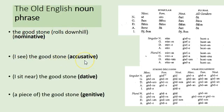Accusative is the direct object case — when the noun is being directly acted on. 'I see,' 'I kick,' 'I throw,' 'I drop' — whatever you're doing these things to takes the accusative case. So 'I see the good stone' — 'the good stone' is accusative.